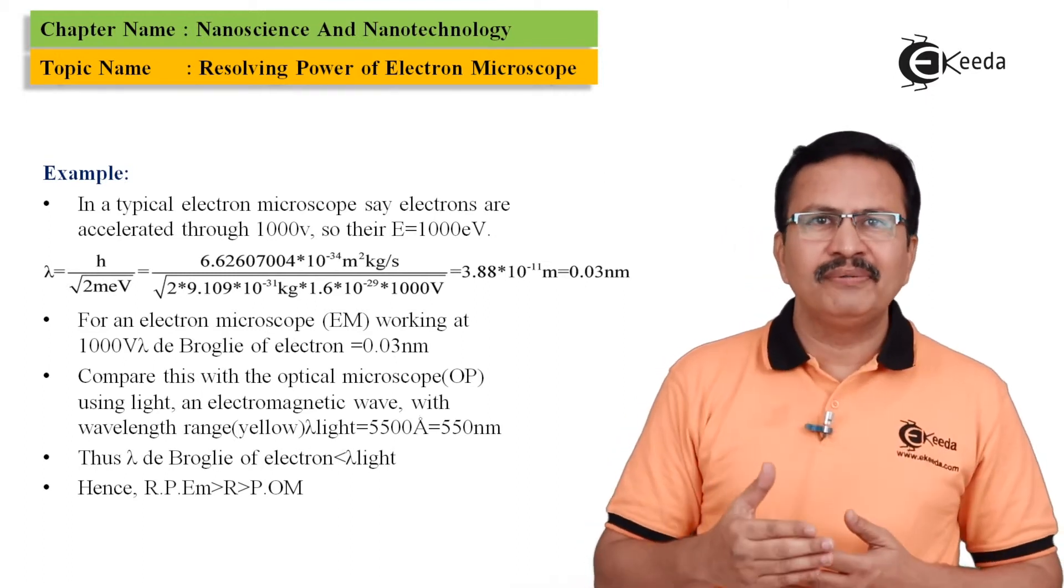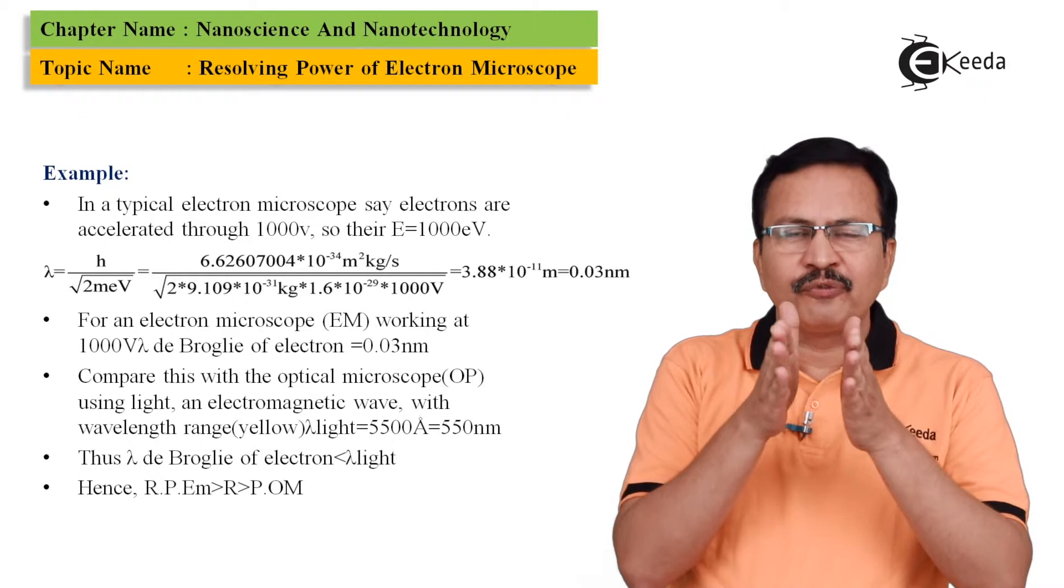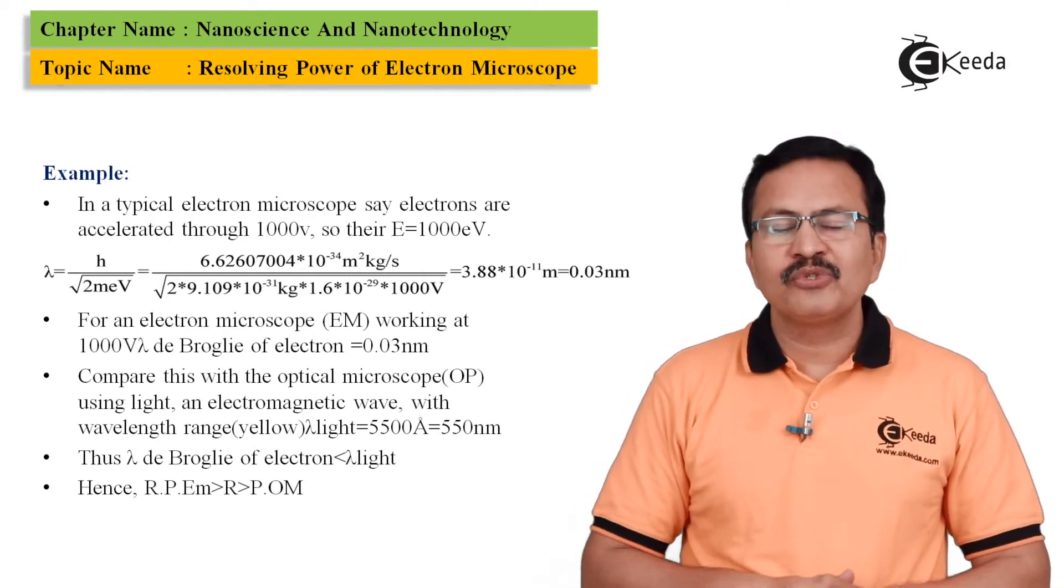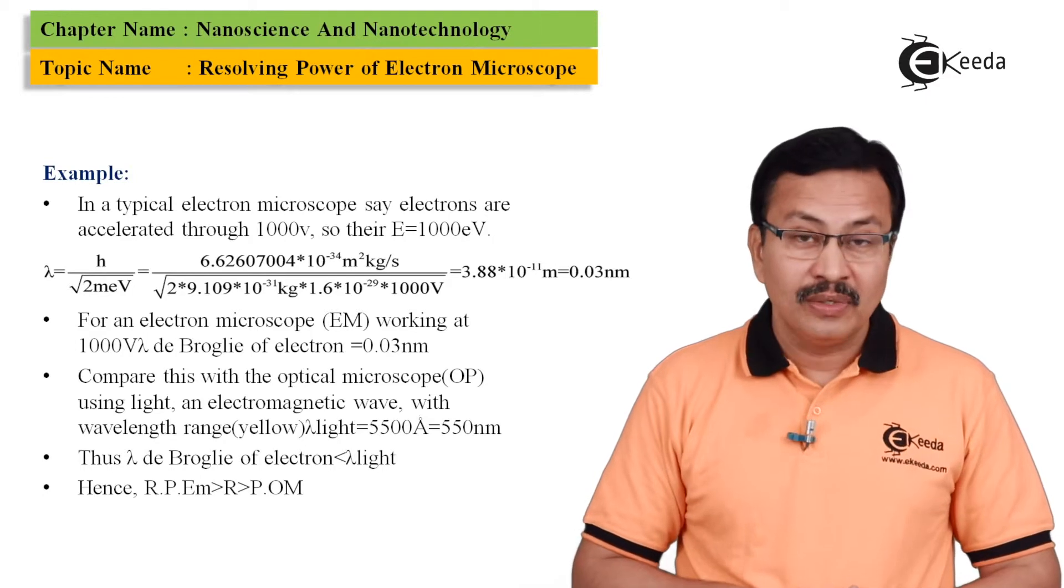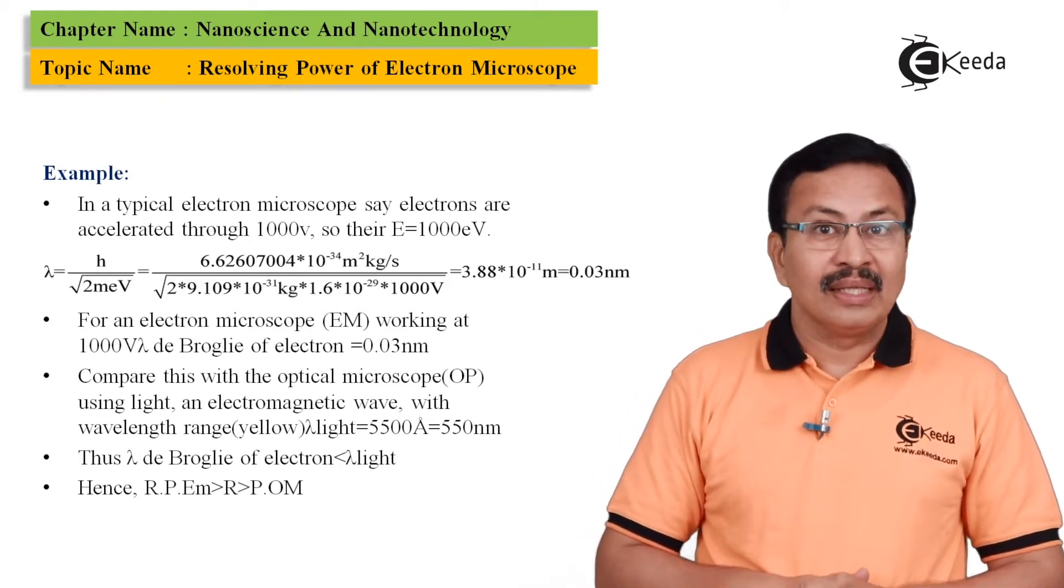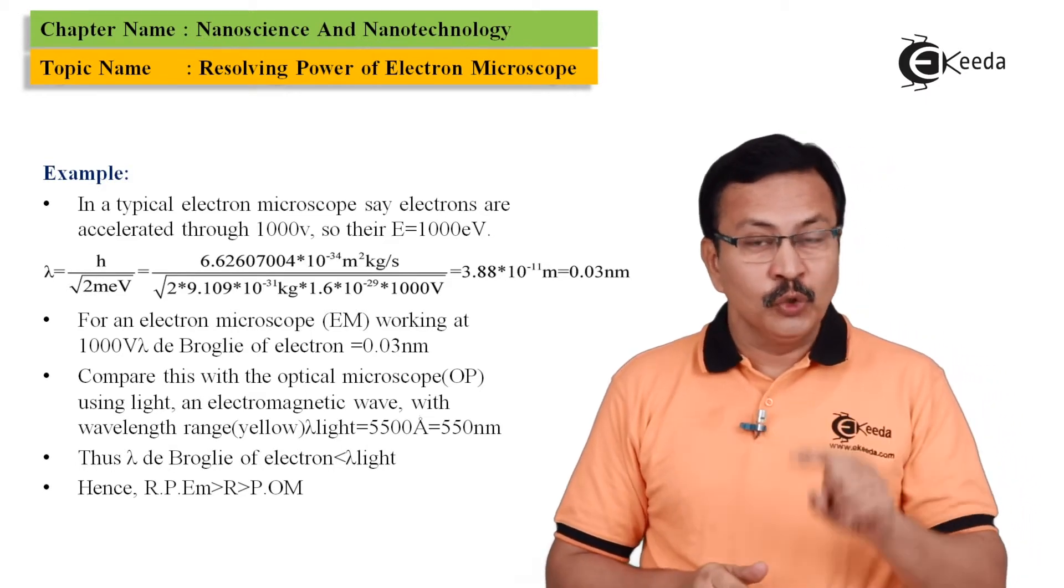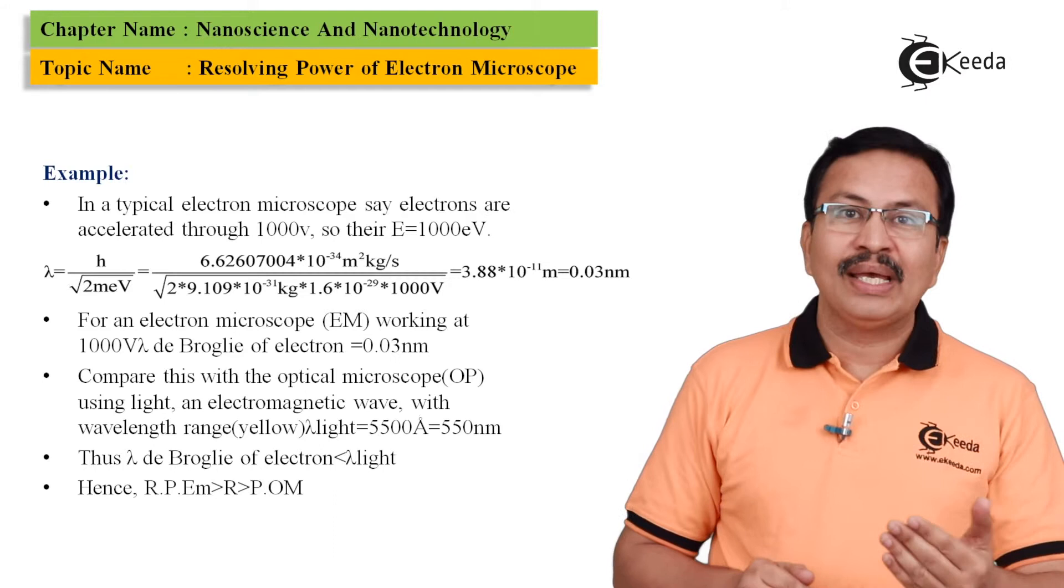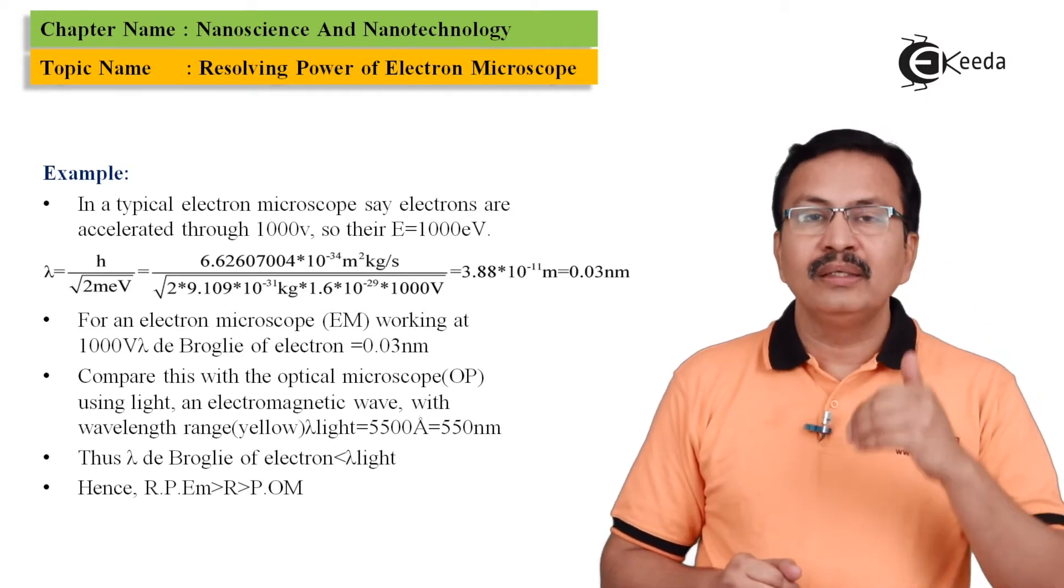Yellow in itself has its own span of wavelengths. But let us have a very typical value of 5500 angstroms which works out to 550 nanometers. As you know, one angstrom is equal to 0.1 nanometers, which we have learned in our earlier video.